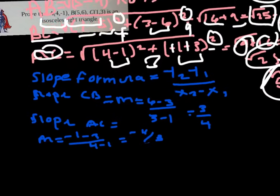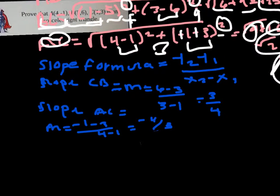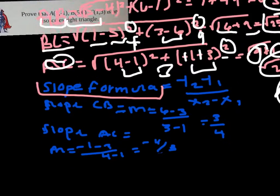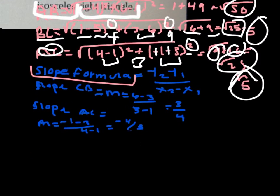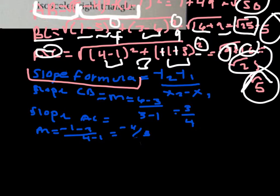Now that we have these distances, we're going to use the slope formula. The reason we're doing this is to prove that it's a right triangle. The slope formula is (Y2 minus Y1) divided by (X2 minus X1).